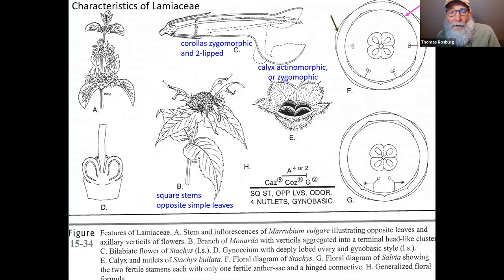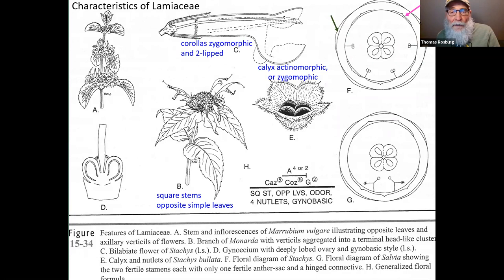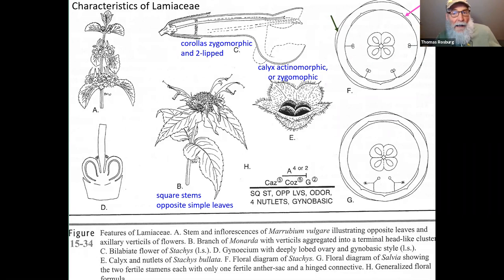The calyx — the collection of sepals, the smaller leaf-like bracts below the petals — can be either actinomorphic, meaning radially symmetrical with a center point from which parts radiate, so that multiple lines of division could cut it into two halves, or it can also be zygomorphic. We'll see that this is one of the characteristics that helps separate genera.